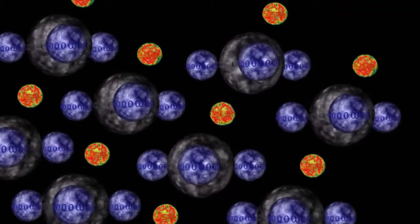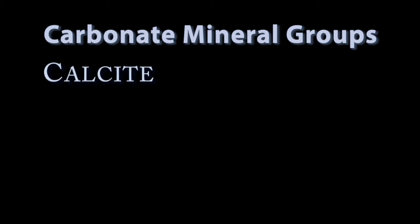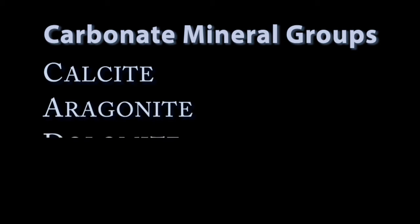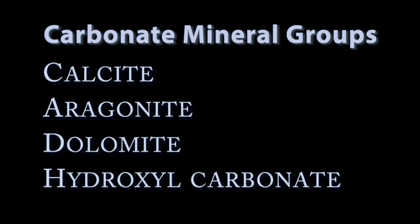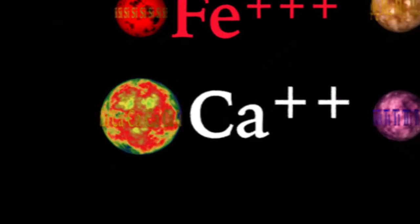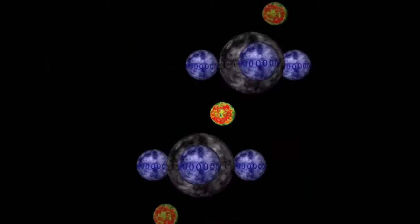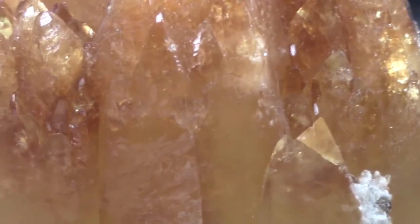Depending on the bonding cations and their crystal geometry, we can distinguish four main groups: the calcite group, the aragonite group, the dolomite group, and the group with the extra hydroxyl anion. The most common bonding cation in carbonates is calcium, making the chemical formula CaCO3 — calcium carbonate — which in one geometry is calcite, and in another is aragonite.